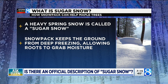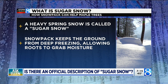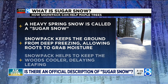What's interesting is this actually relates to sugar maples. When you get a heavy spring snow, what the spring snow will do is it'll help to keep the ground from deep freezing and it will also allow the roots to grab moisture from deeper down. So because the snow helps to insulate a bit, it actually helps the roots grab more water to create more sap. The other thing that snowpack does — the sugar snow — is it helps to keep the woods cooler, which delays leafing.